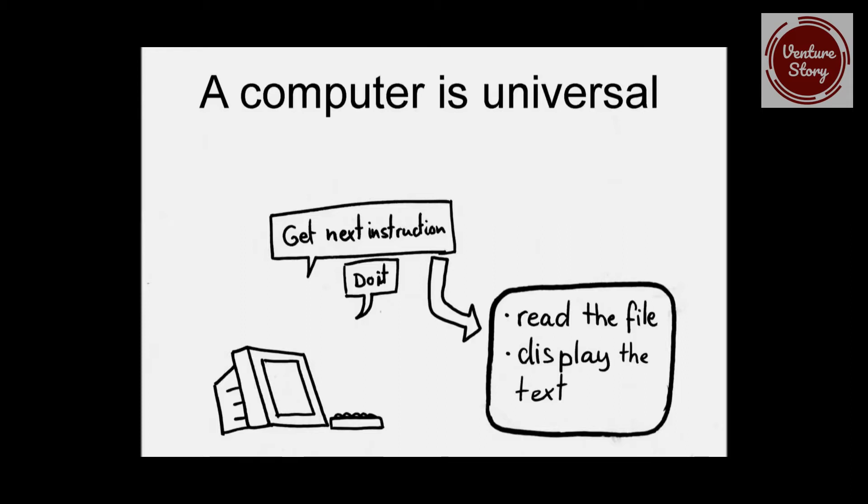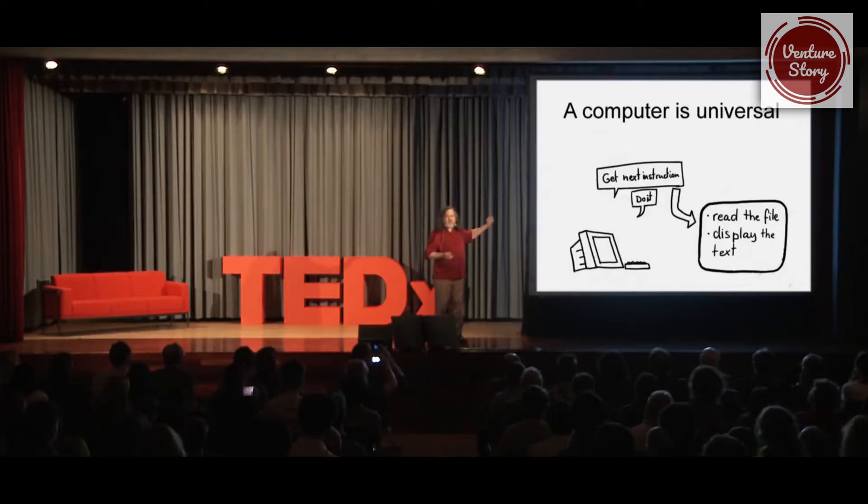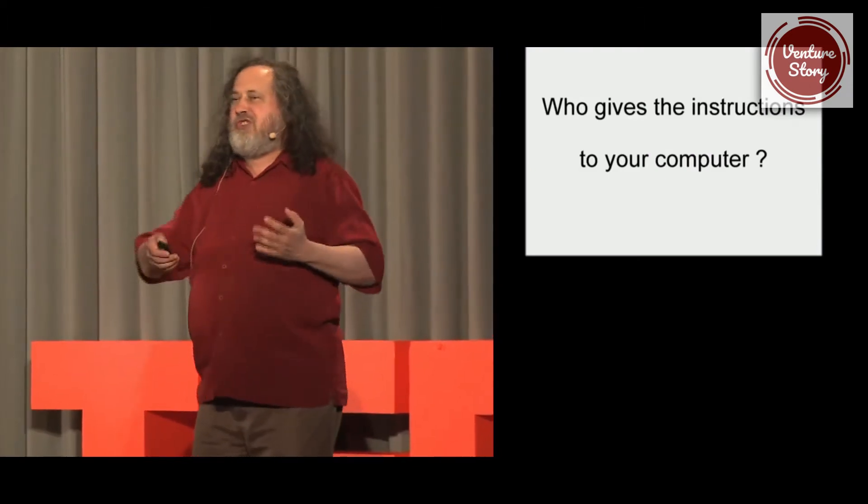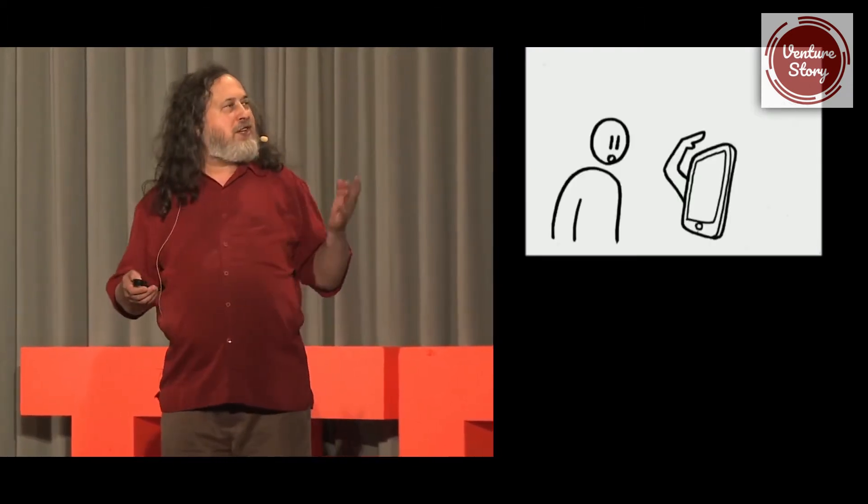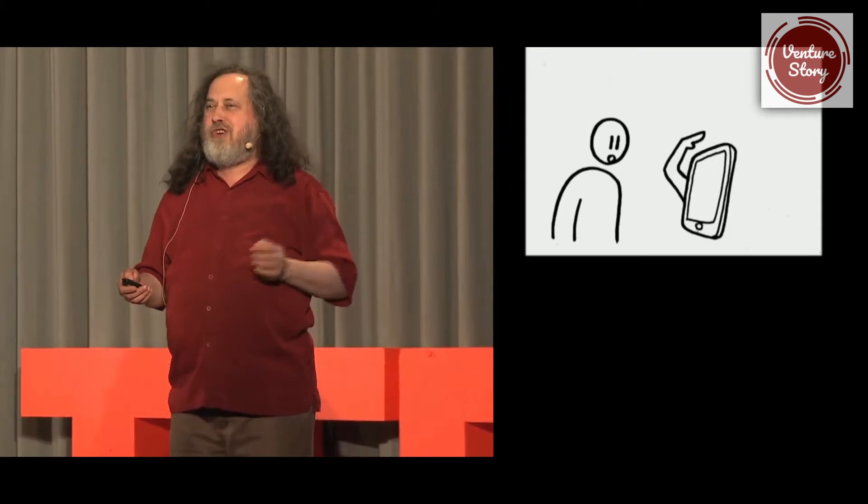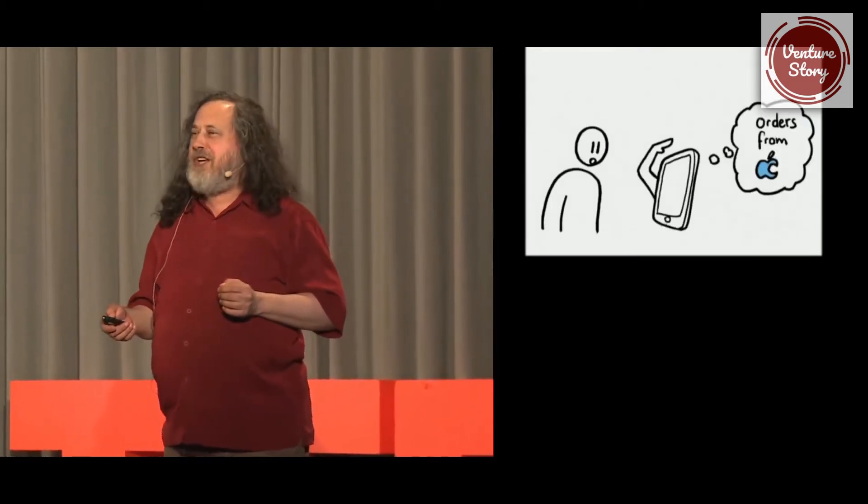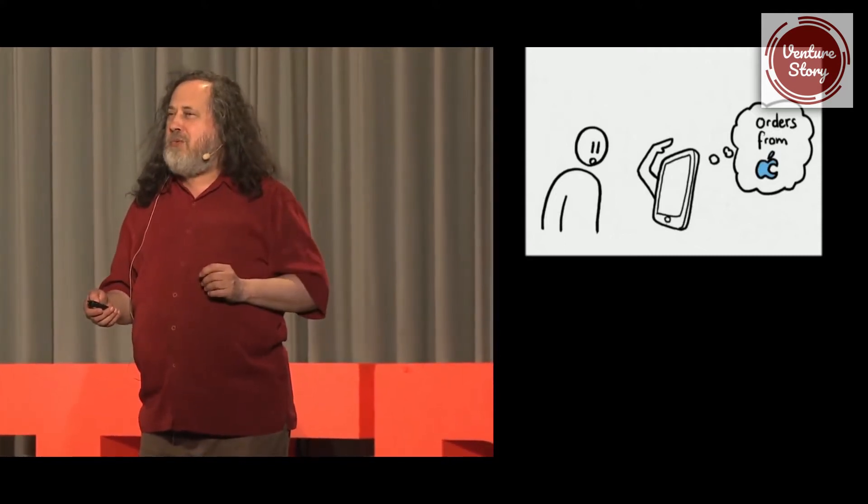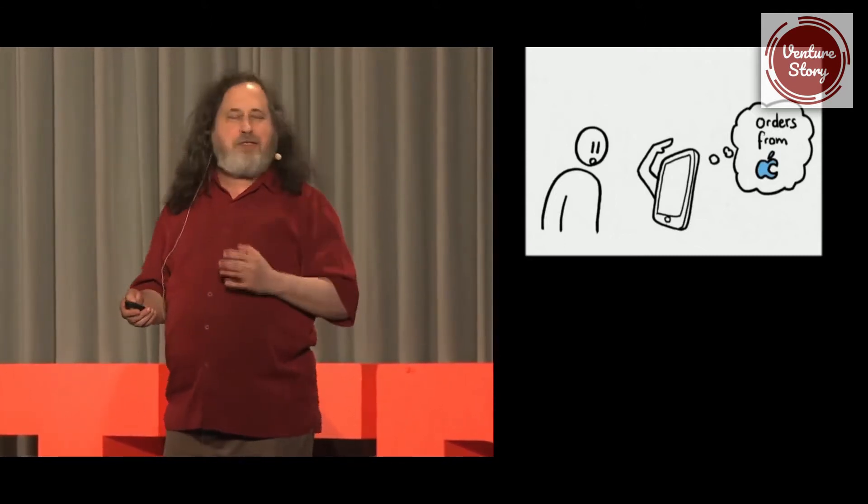The computer only knows how to get out an instruction and do it and get out another instruction and do it. The program has the instructions. It says what to do. So by writing the right program, you can make it do anything, or almost anything. So who gives the instructions to your computer? You might think it's obeying your instructions when really it's obeying somebody else first, and you only as much as that company wants it to, will let it listen to you.